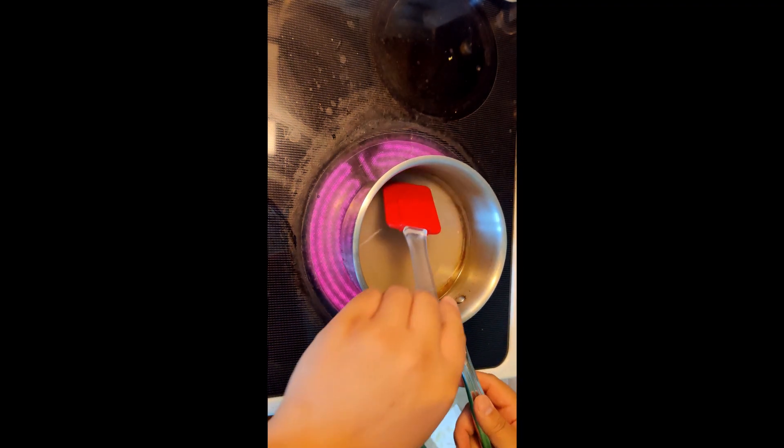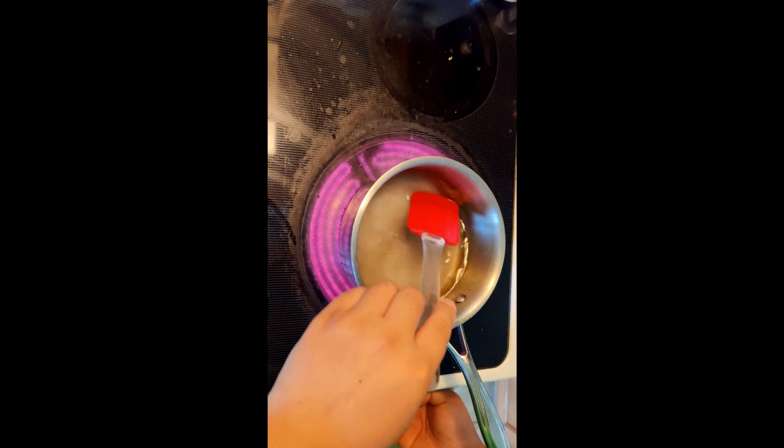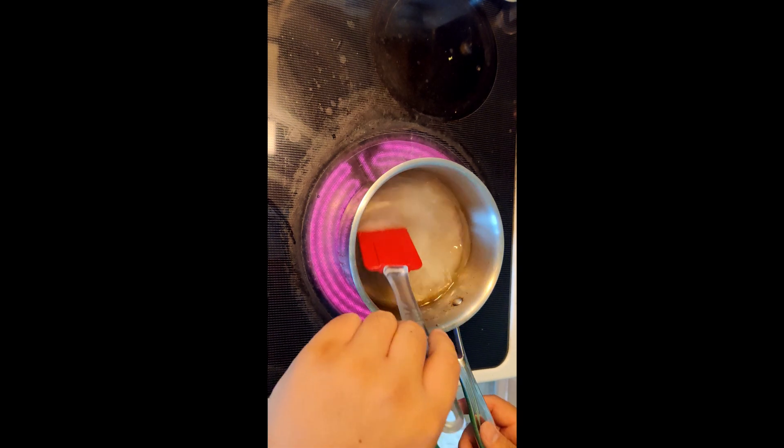Now just stir the water until it comes to a boil and make sure all the sugars dissolve before we pour it into the rice batter.